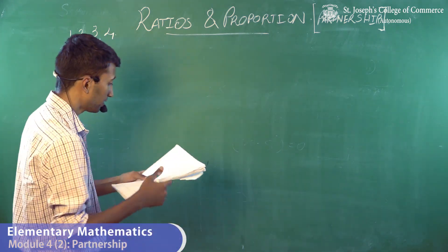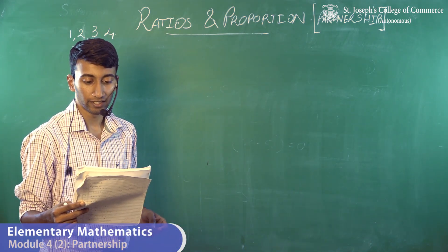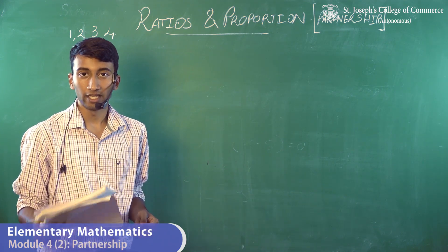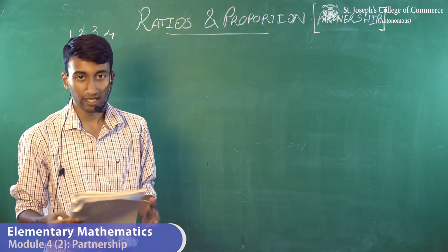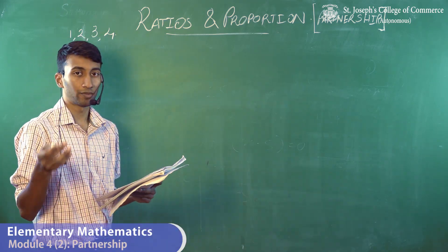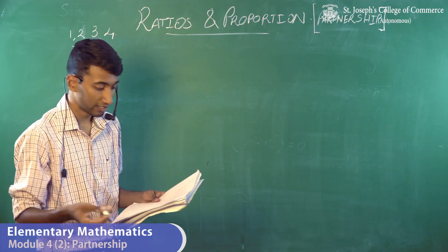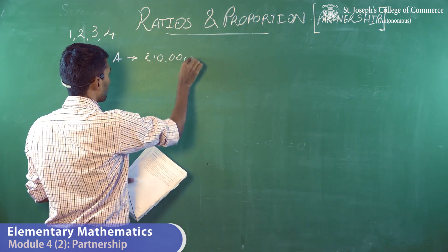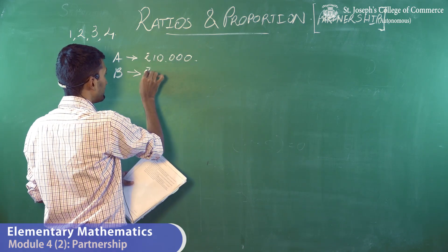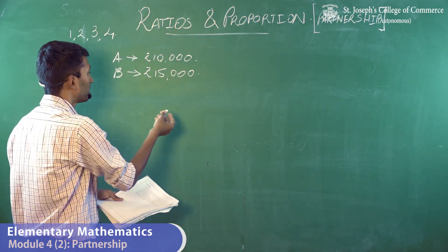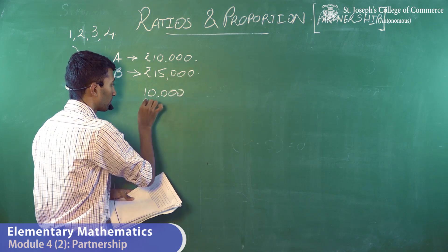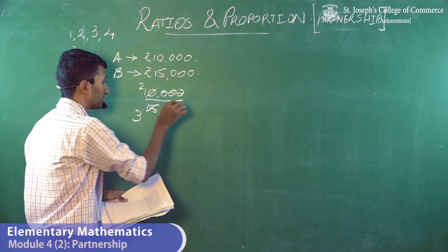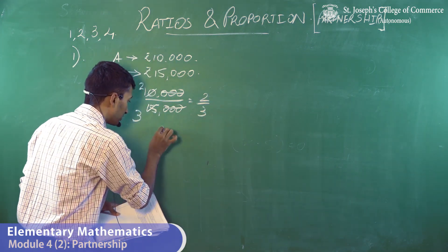The first sum says: A invested rupees 10,000 and B invested 15,000 in a business. The profit received from the business was 6,000. Each one cannot get 3,000 since A invested less than B, so we find out the proportion of how much A and B have invested. Since A invested 10,000 and B invested 15,000, the ratio would be 10,000 to 15,000.